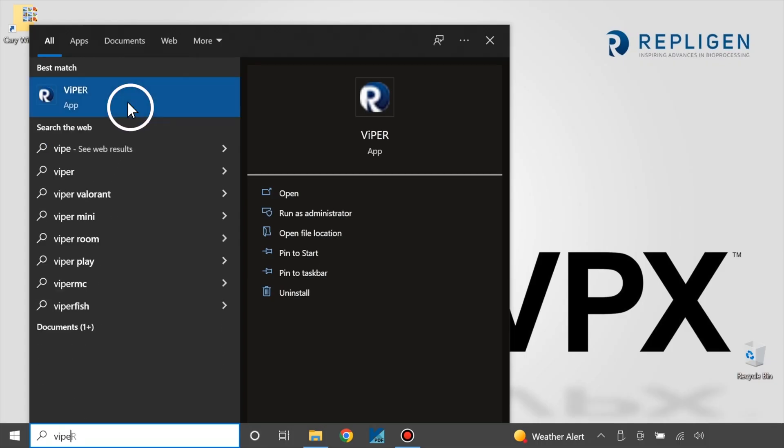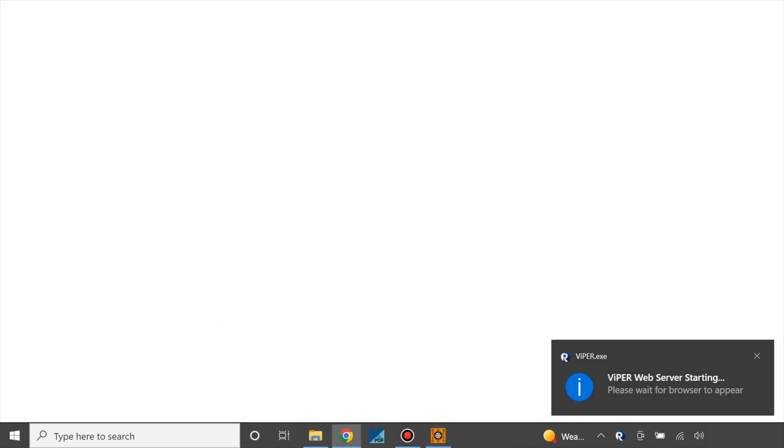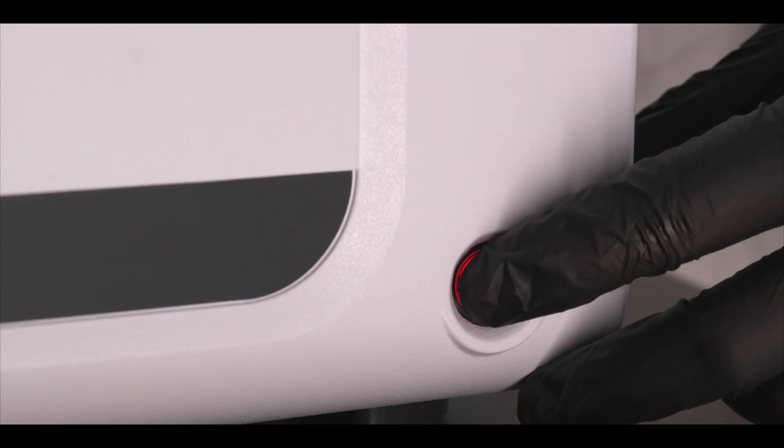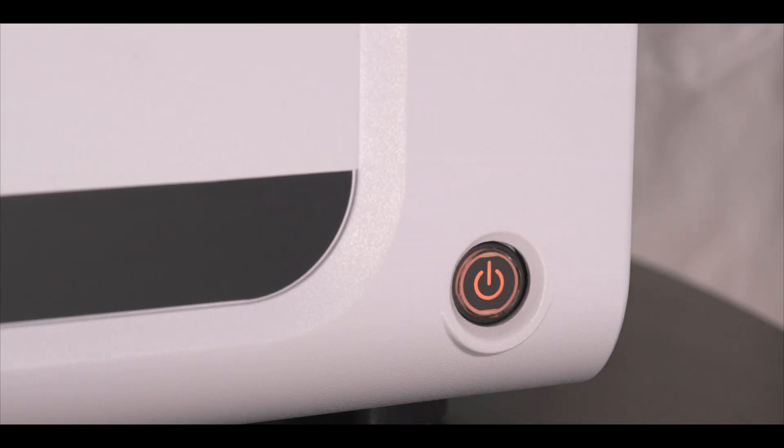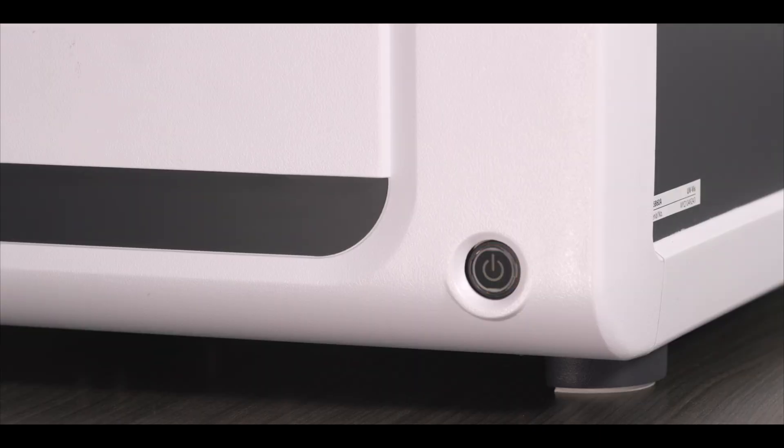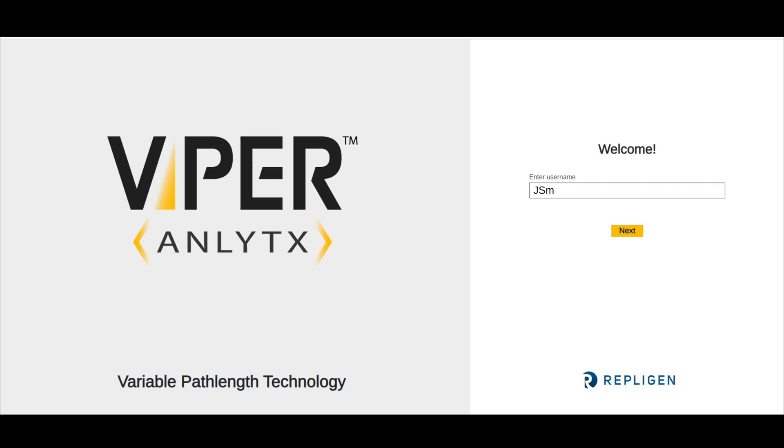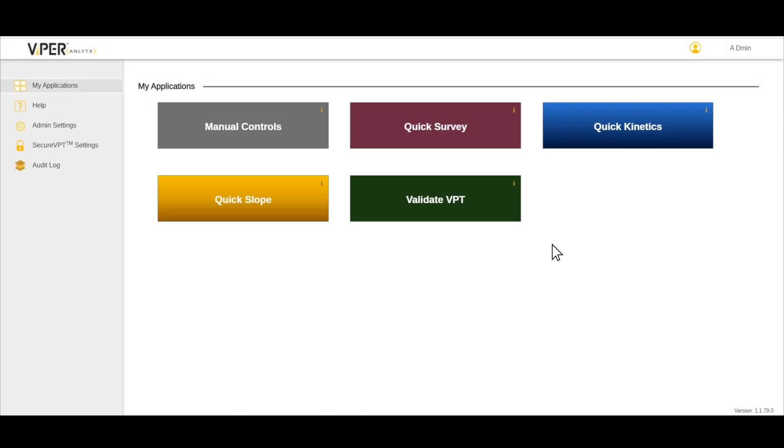Run the Viper software on the computer by double clicking the program icon located on the desktop. The console will run calibrations in the background. Before running any processes in the software, ensure the console says ready and the Cary 60 power button is green. Enter your username and password in the indicated fields.